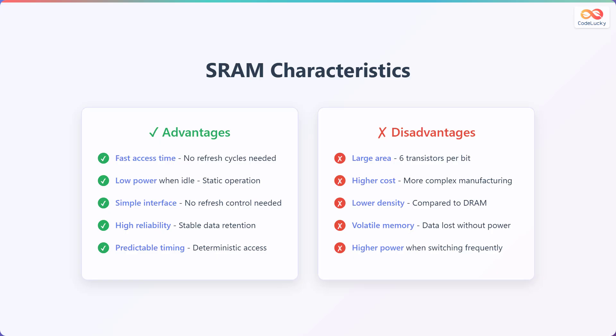However, there are some drawbacks. SRAM requires a large area, using 6 transistors per bit, which leads to higher costs and more complex manufacturing. It also has lower density compared to Dynamic Random Access Memory, or DRAM. SRAM is volatile, meaning data is lost without power, and consumes higher power when switching frequently.